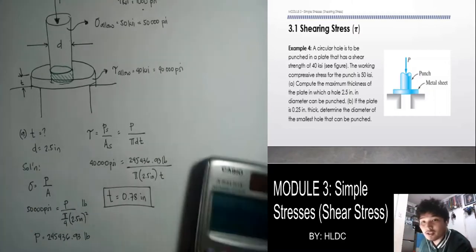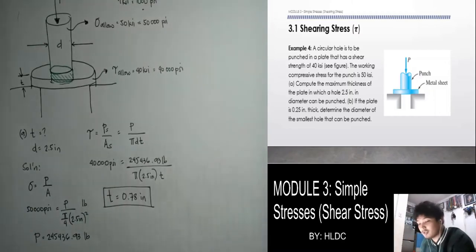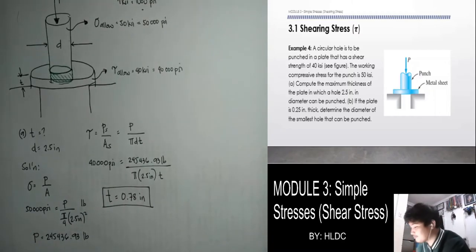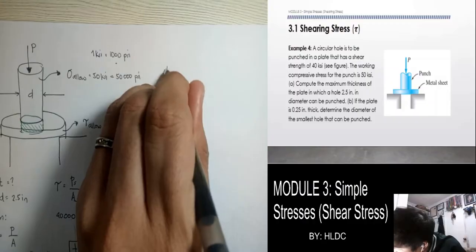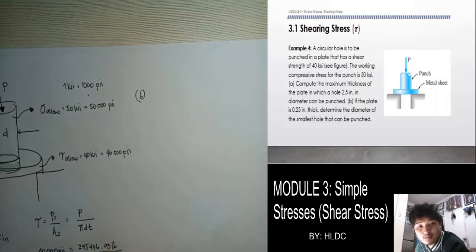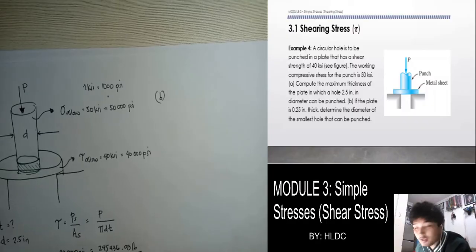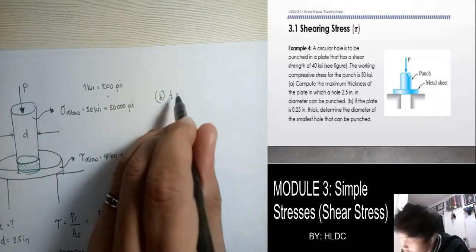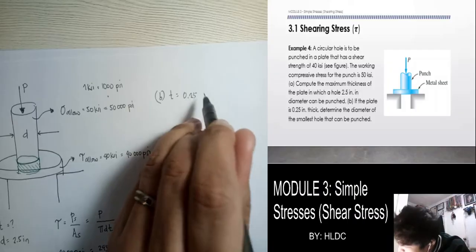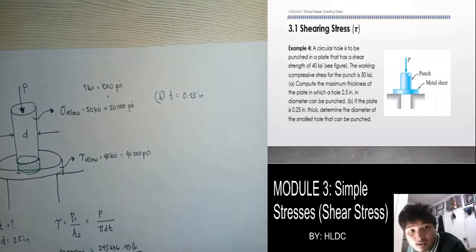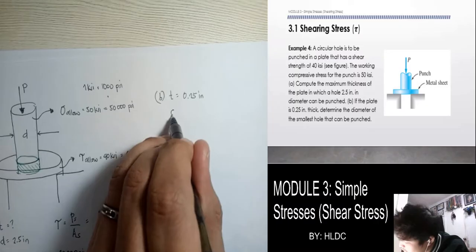That's the answer for Part A. Now for Letter B: the plate thickness is given as 0.25 inch, and we need to determine the diameter of the smallest hole that can be punched.